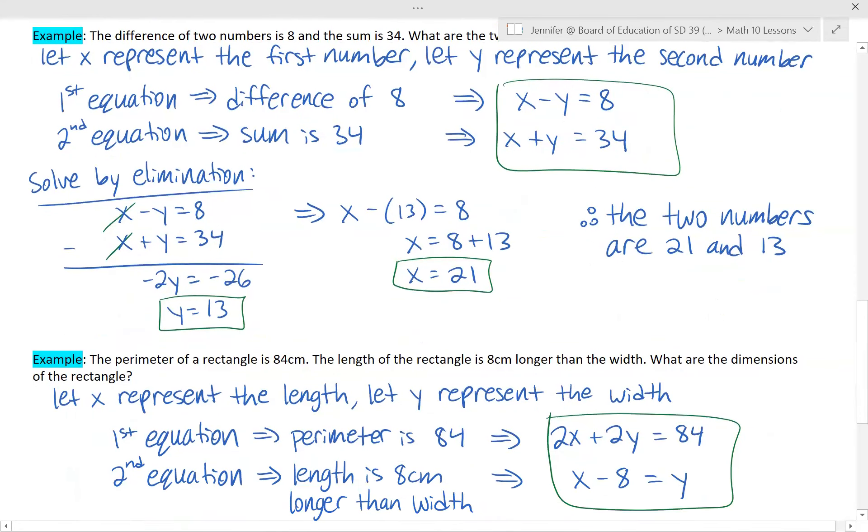The last one. The perimeter of a rectangle is 84 centimeters. The length of the rectangle is 8 centimeters longer than the width. What are the dimensions of the rectangle? So again, when we're looking for our unknowns, look for the question mark. What are they actually asking us for? The dimensions. So X can represent the length and Y can represent the width.